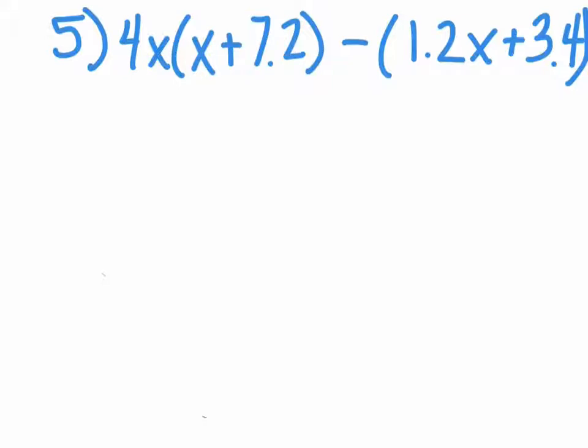First, we're going to distribute. We get 4x times x, which gives us 4x², because x times x is x². Then we're going to do 4x times 7.2.